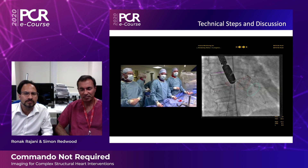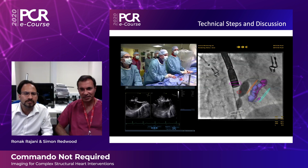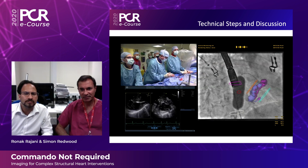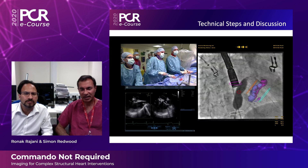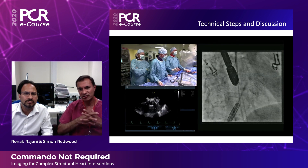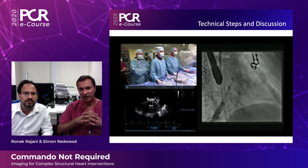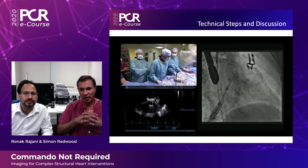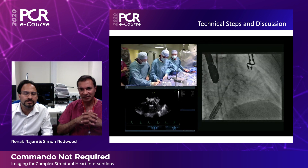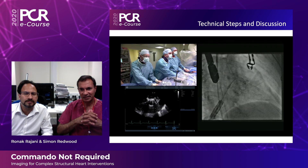This is ballooning the septum in order to create a hole big enough to introduce the Sapien valve. I had a lot of difficulty getting the Sapien valve around that bend toward the left ventricle, so I had to snare the wire in the left ventricle from the other leg and pull that wire through in order to create a rail to bring the Sapien into the MAC.